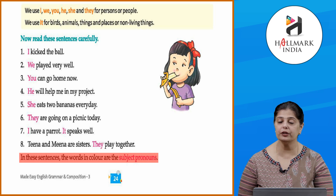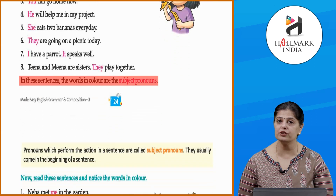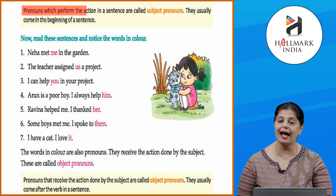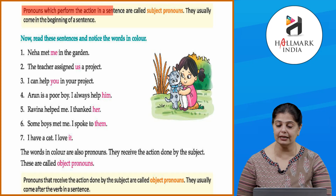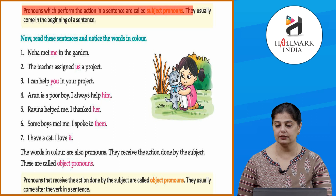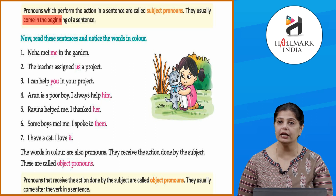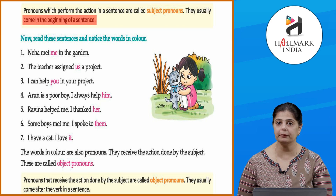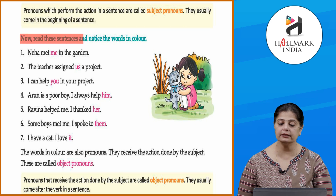In these sentences, the words in color are the subject pronouns. Pronouns which perform the action in a sentence are called subject pronouns. They usually come in the beginning of a sentence. Instead of repeating a name, we use subject pronouns to talk about someone. Now read these sentences and notice the words in color.